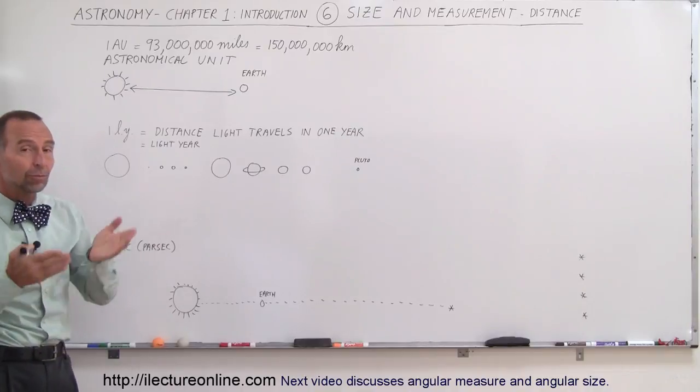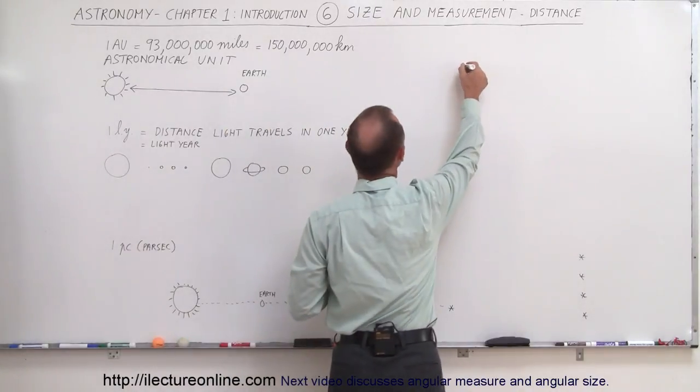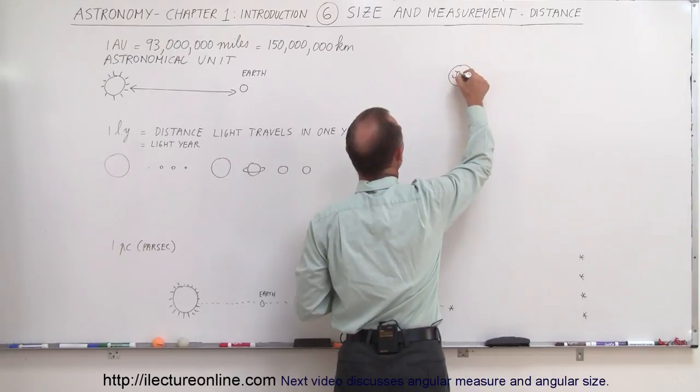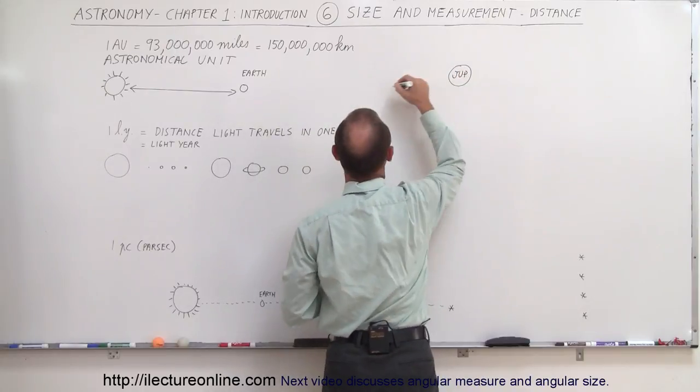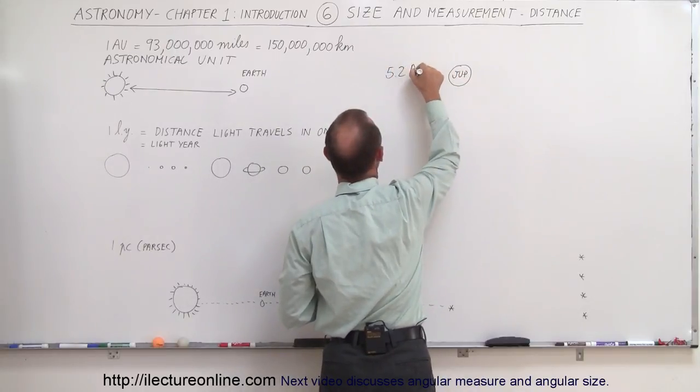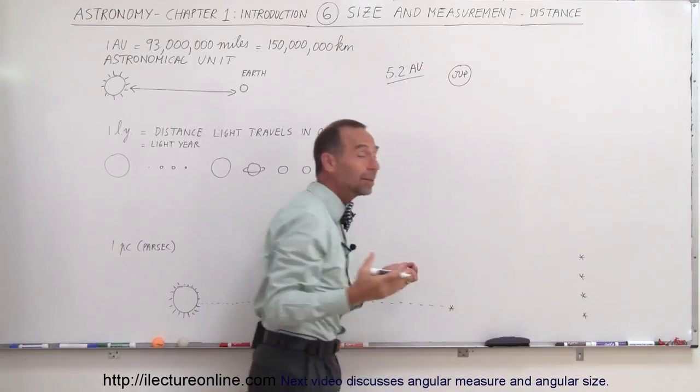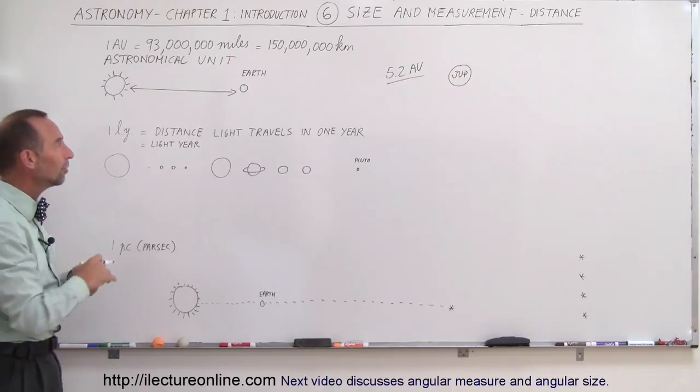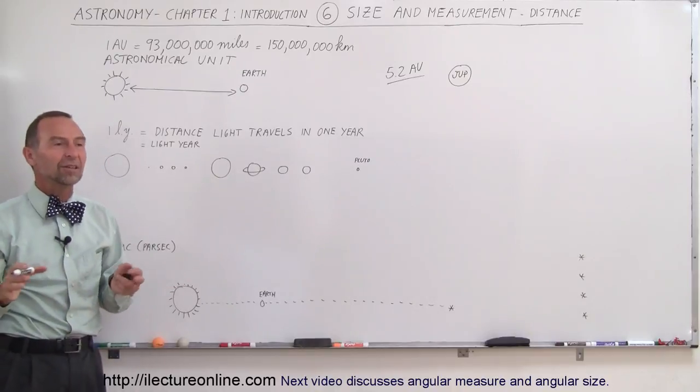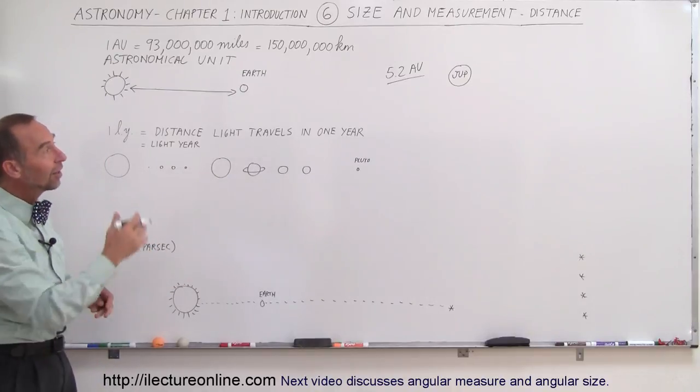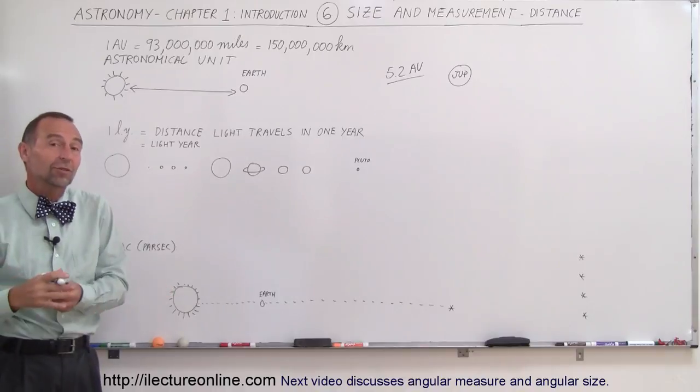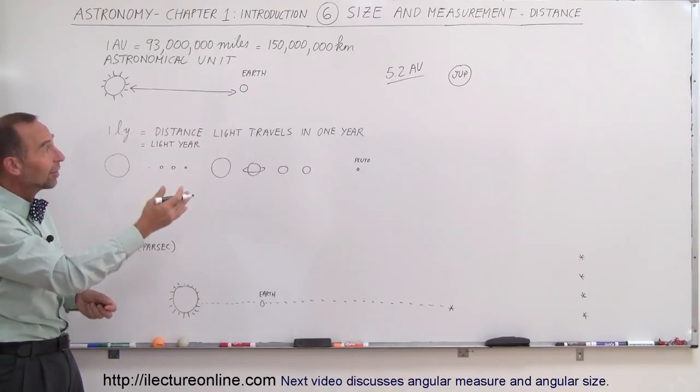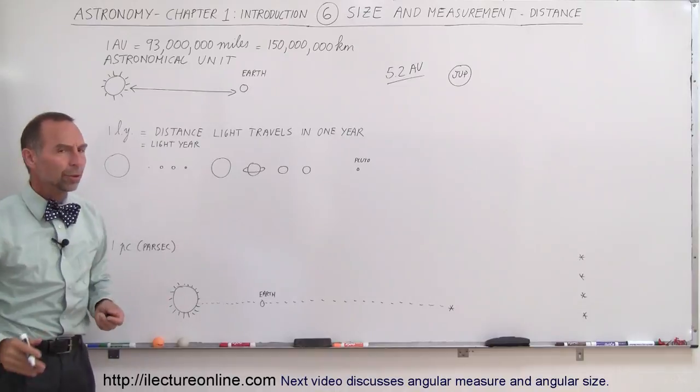For example, the distance from the sun to Jupiter is about 5.2 astronomical units. So if this is Jupiter right here, the distance from there to there is about 5.2 astronomical units, which automatically means it's about 5.2 times the distance between the sun and the earth. If you round things off to about 100 million miles, then 5.2 astronomical units is about 500 million miles between the sun and Jupiter.